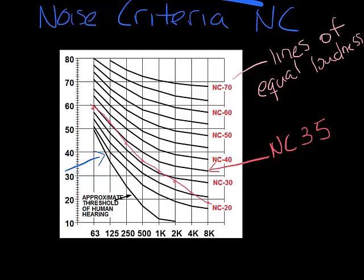Now I want to plot another sound curve. This time let's look at something that might be a diffuser. 29 in the first, 32 in the second, 35, 36, 35, 33, 30, and 28. Again, when you draw the line here, you can see that although it's a very different curve, it's about an NC 35 also. This is most likely a diffuser because you can see it peaks in the fourth band or so.